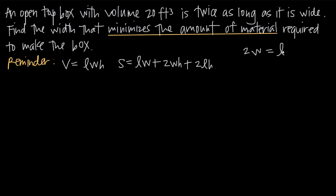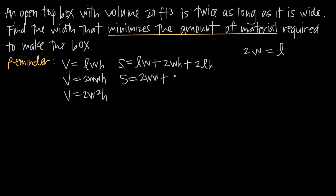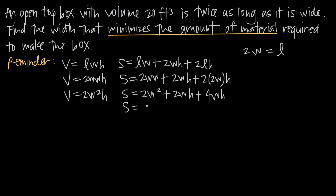We substitute l = 2w everywhere to eliminate the variable l. For volume: 2w · w · h = 2w²h. For surface area, replacing l with 2w gives: SA = 2w·w + 2w·h + 2·(2w)·h, which simplifies to SA = 2w² + 2wh + 4wh, or SA = 2w² + 6wh.